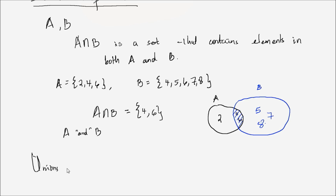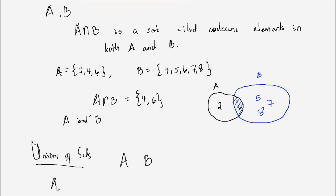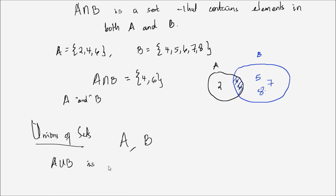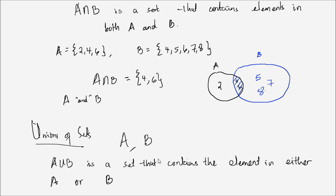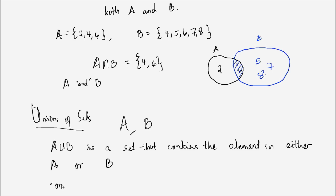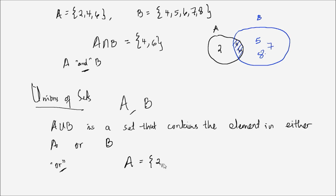Unions of sets: given two sets A and B, A union B — denoted by A ∪ B — is a set that contains the elements in A or B. So a union means 'or,' just like an intersection meant 'and.' Let's use the same example. A has elements {2, 4, 6} and B has elements {4, 5, 6, 7, 8}. The union between A and B, which is A ∪ B, contains the elements 2, 4, 5, 6, 7, and 8.